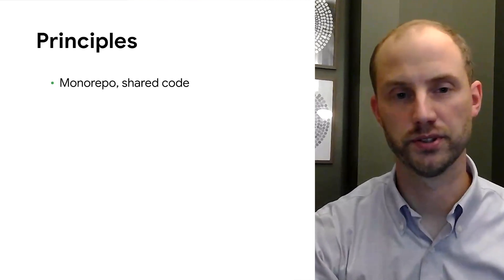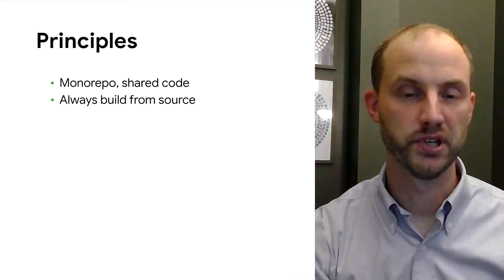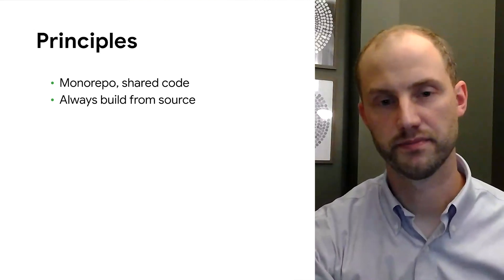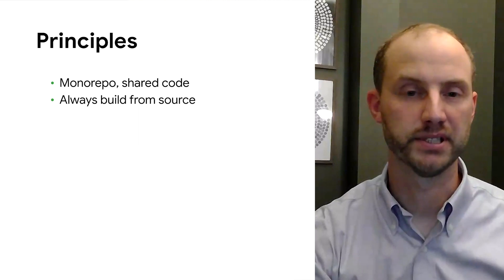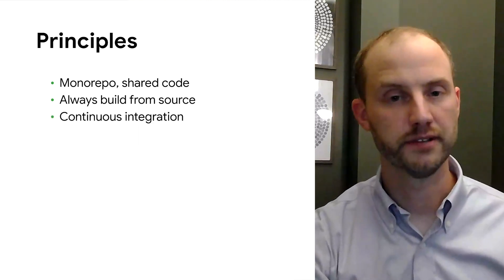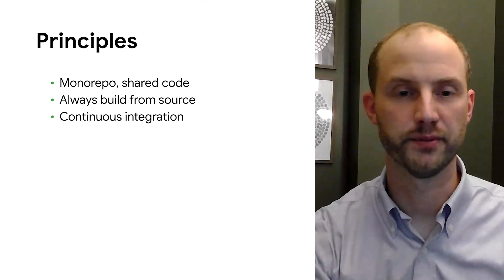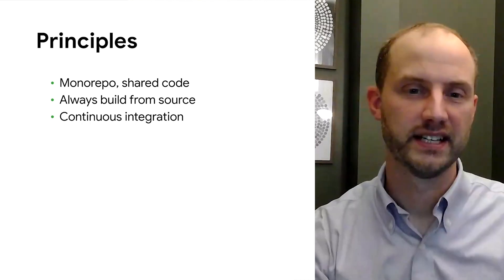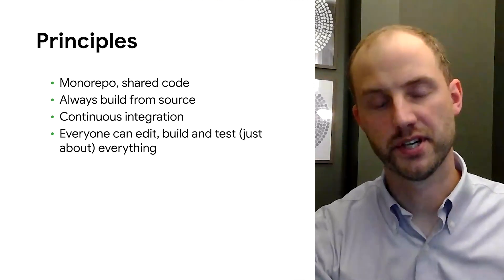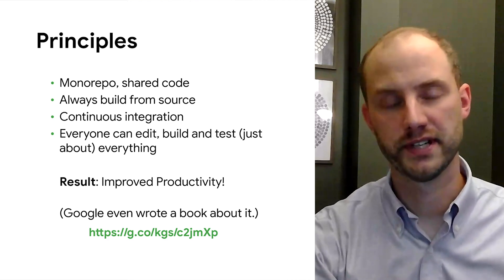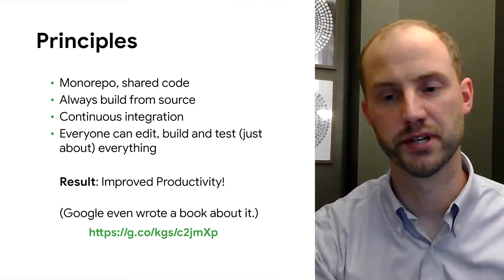First, as many of you already know, Google uses what we call a monorepo or a single code repository for all of its code. Google practices building all of its applications from source, so we never use checked-in binaries or libraries for a variety of reasons, mostly around compatibility. We practice continuous integration, so rather than having long-lived feature branches, all developers are continuously vetting their code and checking it into head, so we're all working at the same cut of the repository. Perhaps most significantly, in this environment, everybody should be able to edit, build, and test just about everything. And the result, in our view, is improved productivity across the business, so much so that we wrote a book about it — the software engineering book — which has chapters both on our continuous integration approach and on our build approach.